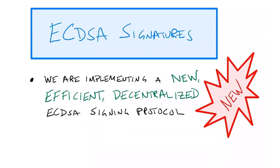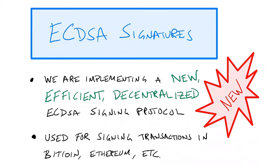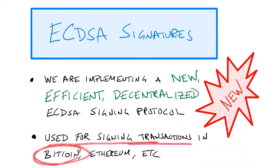However, what we're working on now is implementing new decentralized signing protocols for legacy signature schemes — in particular, the most important one we're working on right now is the ECDSA signature scheme. The reason ECDSA is important is that it's very widely used and standardized. What we're doing right now is implementing a new, efficient decentralized ECDSA signing protocol. This is new technology that we're developing and it's quite exciting, because ECDSA is the scheme used for signing transactions in Bitcoin, Ethereum, and many other blockchains.